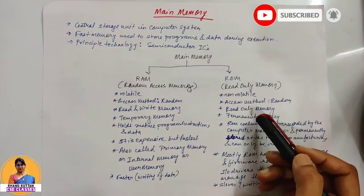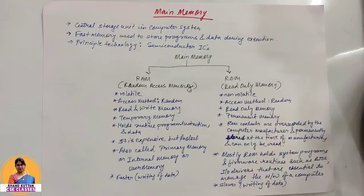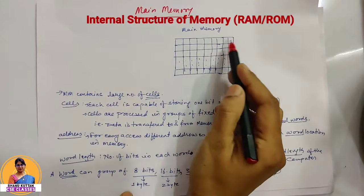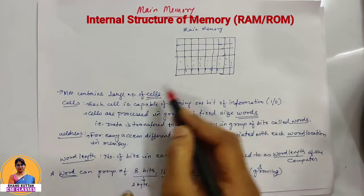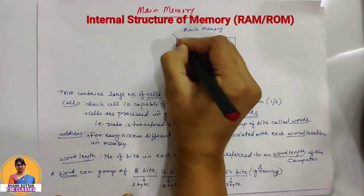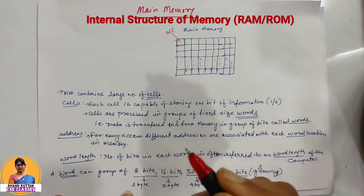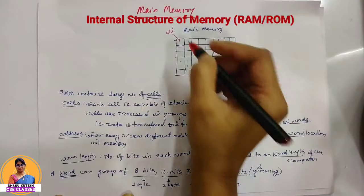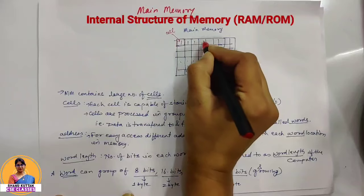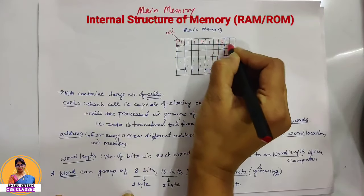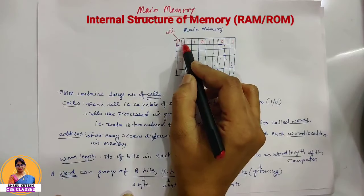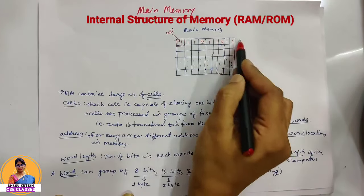Before we look at the internal structure of main memory — main memory is made of a large number of cells. Main memory contains a large number of storage cells. What are cells? A single cell stores one bit, either one or zero. These are groups of cells. For example: one, zero, one, one, zero, one, one, one — this is the data stored. Each cell is capable of storing either one or zero, and cells are processed in groups.